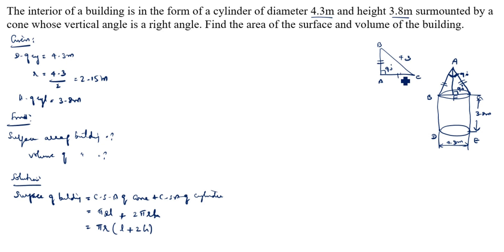Triangle ABC: BA is equal to AC is equal to L. We will use Pythagoras theorem. BA square plus AC square is equal to BC square. L square plus L square is equal to 4.3 the whole square. L square is equal to 18.49 divided by 2 is equal to 9.245.